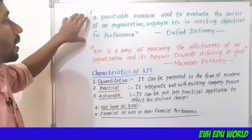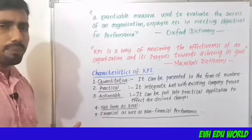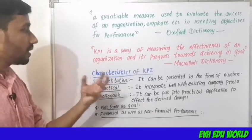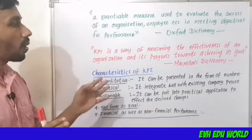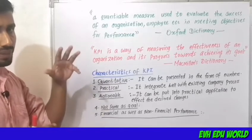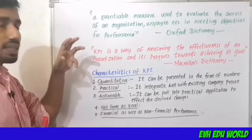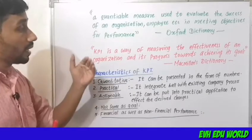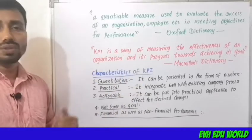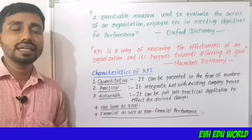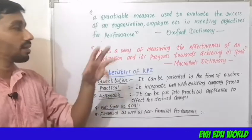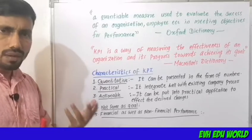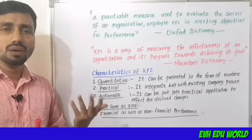KPI is a way of measuring the effectiveness of an organization and its progress towards achieving its goals. An organization measures effectiveness and its progress towards achieving goals. This is the key performance indicator of performance at a high level or low level.